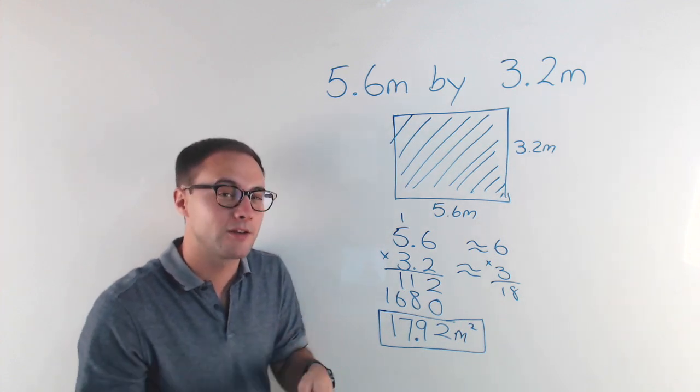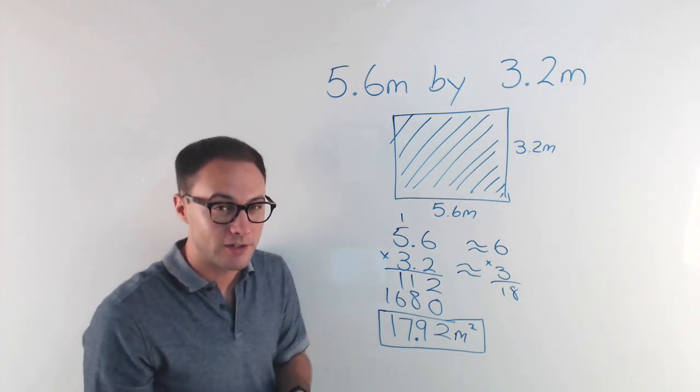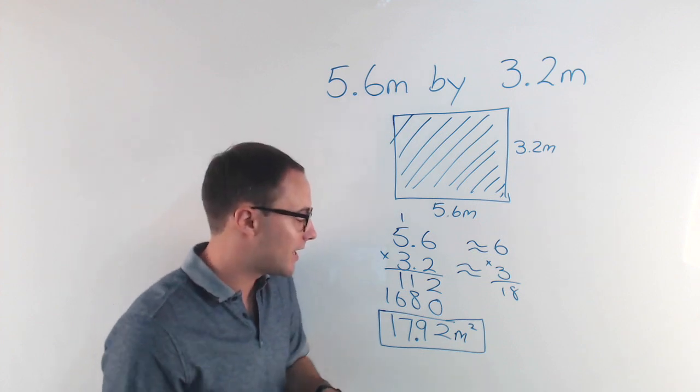The small can of paint could cover 20 meters squared or 20 square meters. So do we have enough? And the answer is yes.